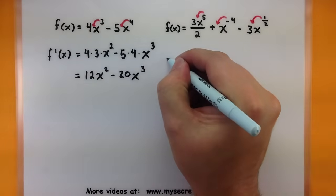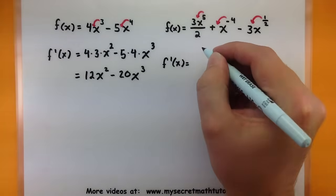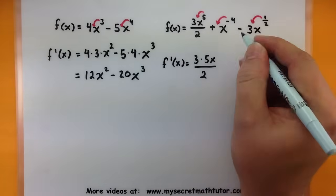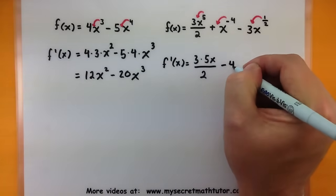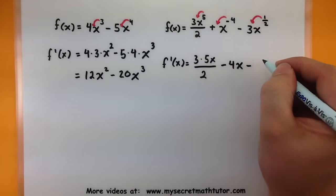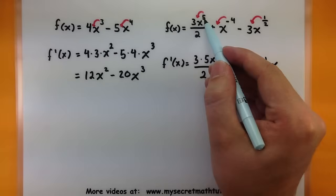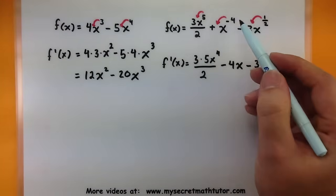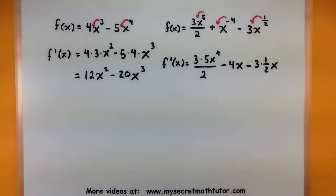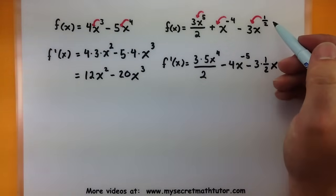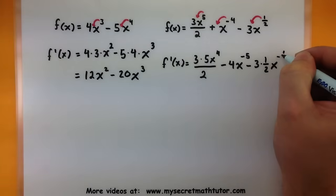Our derivative f prime of x: I'll have 3 times 5 times x all over 2. I'll bring down my minus 4x, I'll bring down the one half, and now we have to go back and reduce all of those powers by one. So five minus one is four. Minus four minus one is minus five. And one half minus one is negative one half.